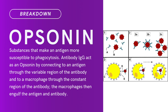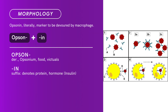Compound term: opsonin. Brief definition: substances that make an antigen more susceptible to phagocytosis. Antibody IgG acts as an opsonin by connecting to an antigen through the variable region of the antibody and to a macrophage through the constant region of the antibody. The macrophages can engulf the antigen and antibody. Term morphology: opsonin literally means 'marker for devouring by macrophage.'